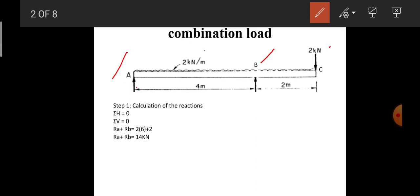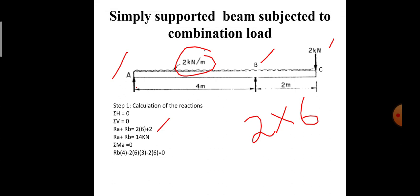We have two loads: a 2 kN point load and a 2 kN/m UDL. We convert the UDL to a point load by multiplying by the total distance of 6 m, giving 2 × 6 = 12 kN acting downward. Including the 2 kN point load (also downward), the upward forces equal the downward forces, so R_A + R_B = 14 kN.